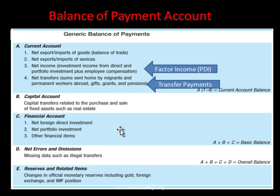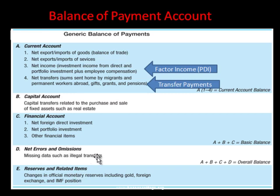If the investment does not give ownership rights, such as buying shares of a company, that is portfolio investment. Other financial investments include trade credits, accounts payable, and accounts receivable. The third account is reserves and related items, covering changes in official reserve balances of the country. The last item is net errors and omissions, which includes missing data or any illegal transfers that do not come to the knowledge of authorities.